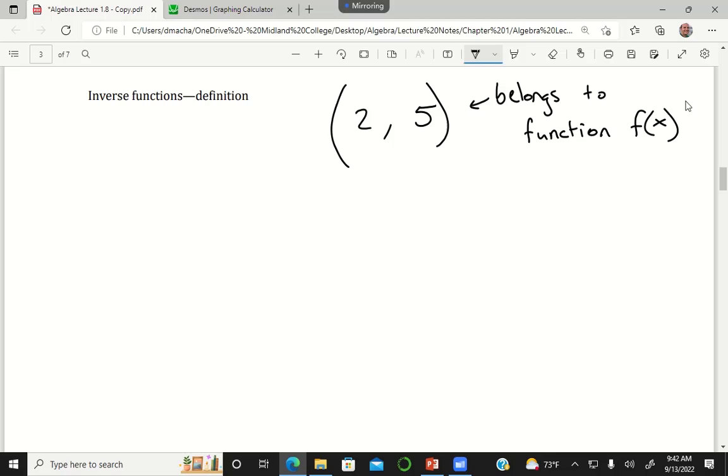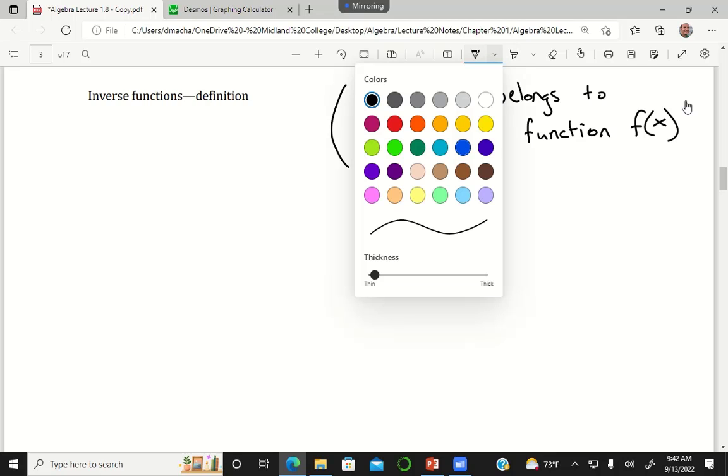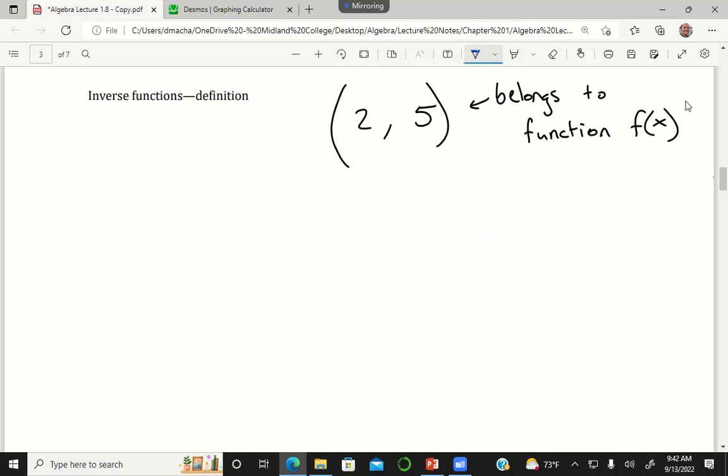We're saying that for the input value 2 you get the output value 5. For the inverse function, we're guaranteed to have the ordered pair (5, 2) belong to my inverse function.